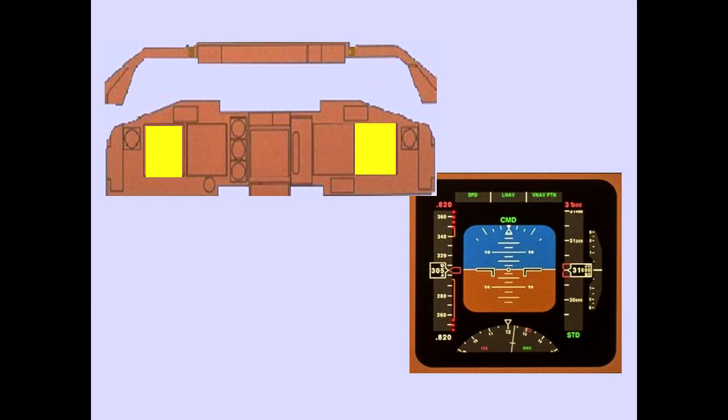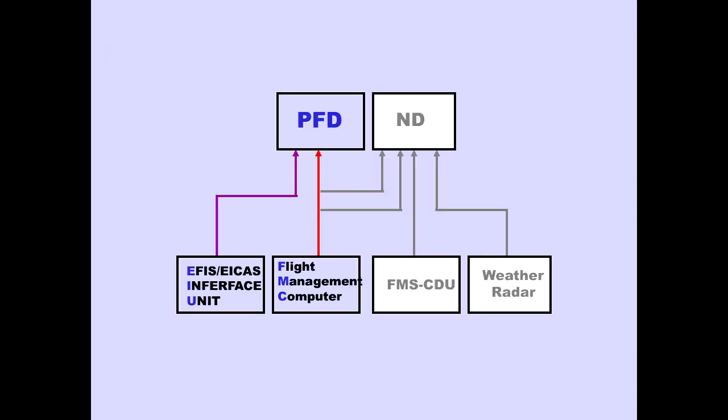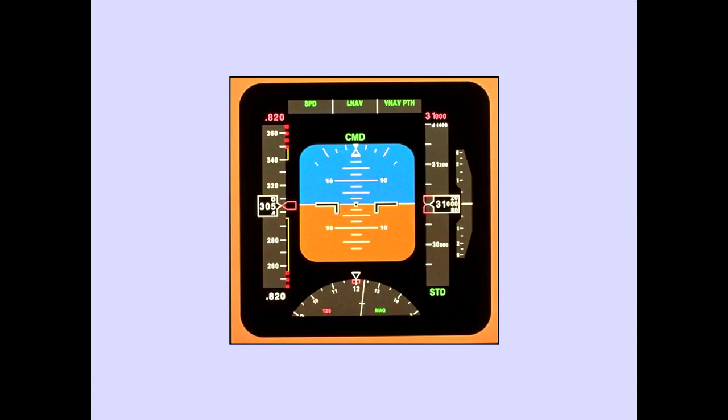Primary flight displays are located on the captain's and first officer's instrument panels. The PFD information is generated from information received from an EFIS ICAS interface unit, EIU, and a flight management computer, FMC. The PFD displays all parameters necessary for flight path control. Each indication will now be discussed in detail.